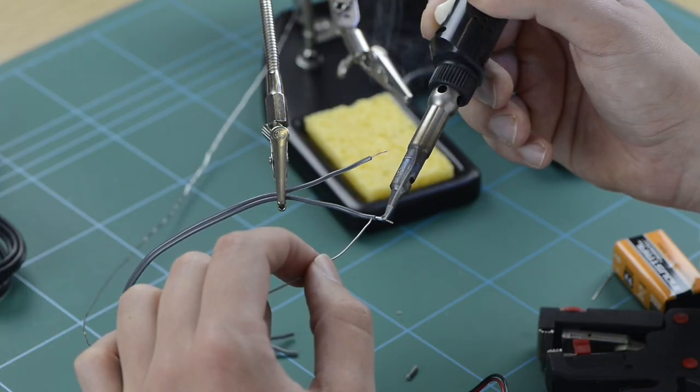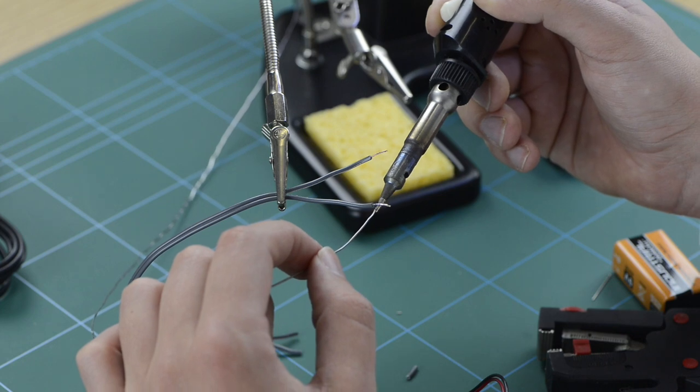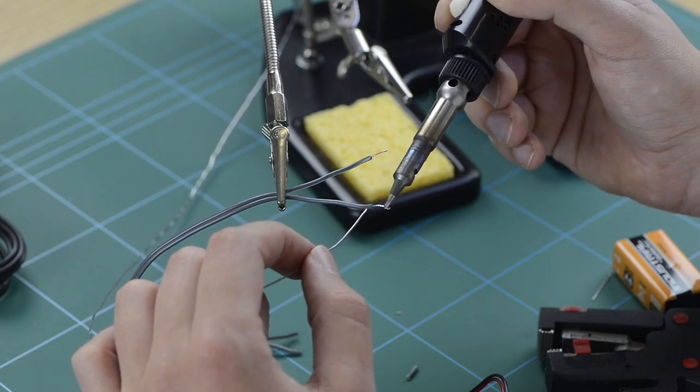Pop the cable into your helping hands and carefully tin the copper strands by running the soldering iron and solder against the exposed strands until they have been coated with solder.